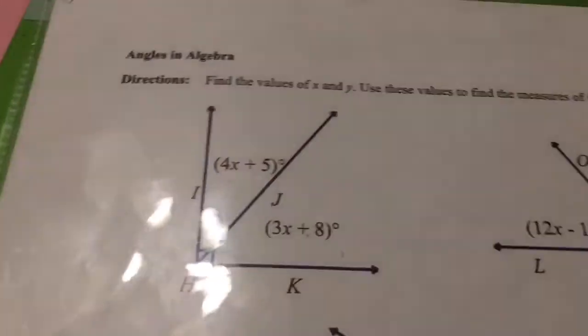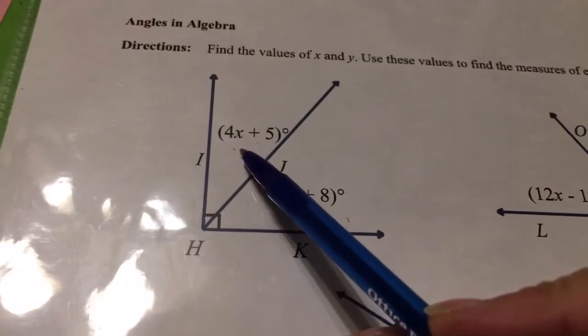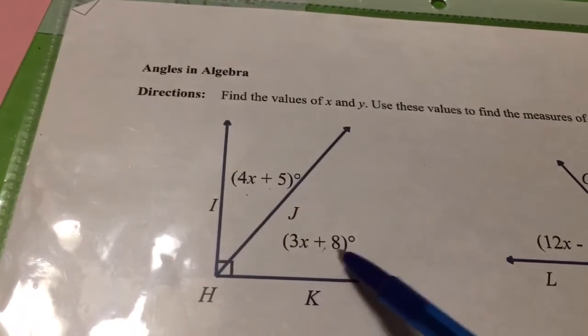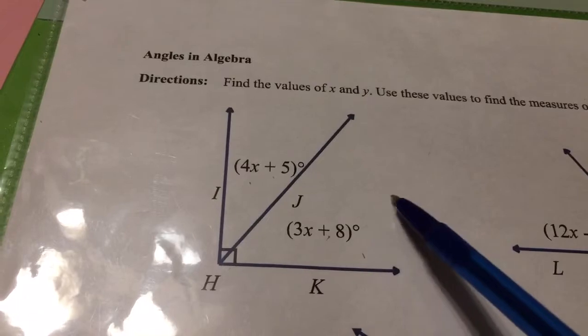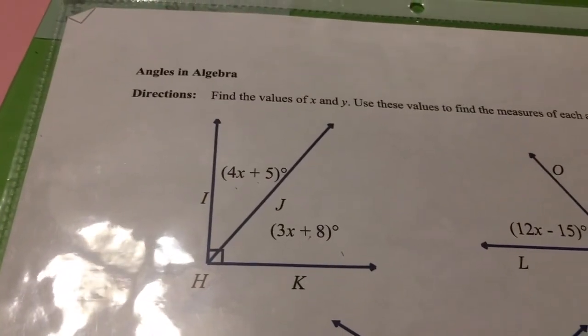When we take the paper and put it over on the other side we're here. We're here. This time we have 4x plus 5 plus 3x plus 8 equals 90. Equals 90. Combine like terms.